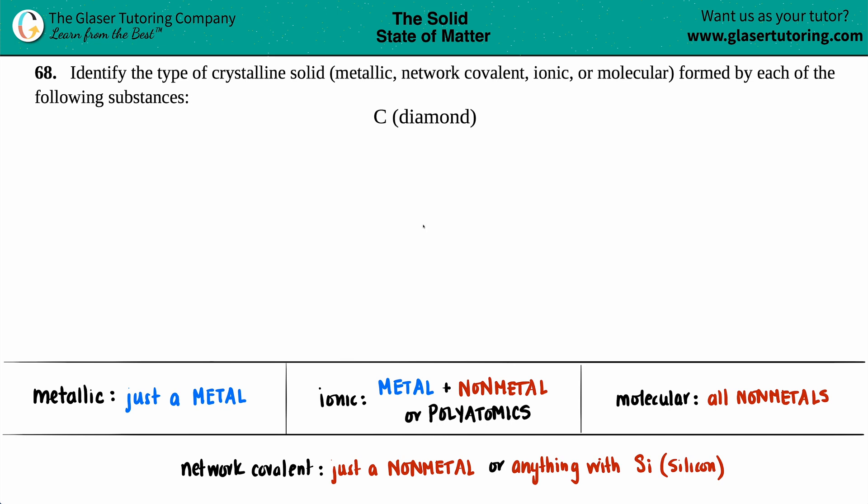Number 68: Identify the type of crystalline solid, whether it's a metallic, network covalent, ionic, or molecular crystalline solid that's formed by each of the following substances. In this case we have carbon, the diamond form, aka diamond.